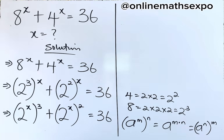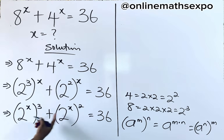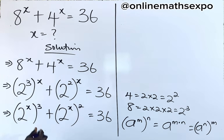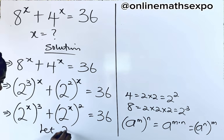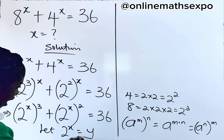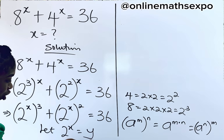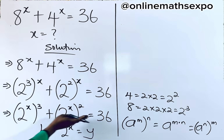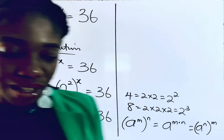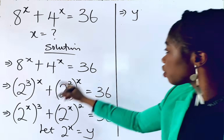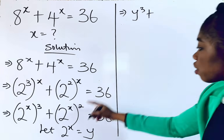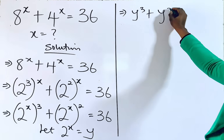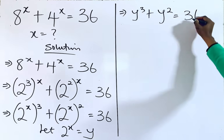Interesting. Did you observe anything? You can see that what we have in the brackets are the same. So I can choose to replace it with any variable. Let's say 2 to the power of x equals y. Substituting this value of y in this equation, we are going to have y cubed plus y squared is equal to 36.